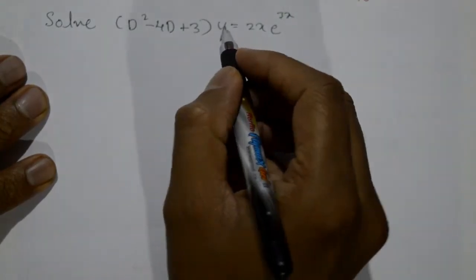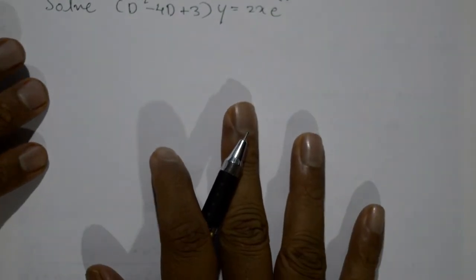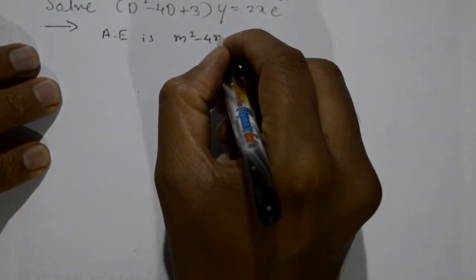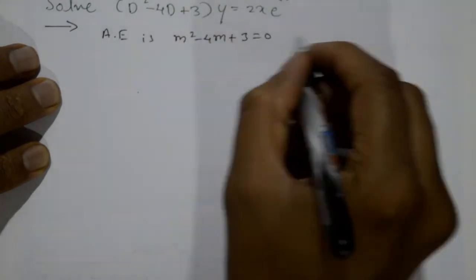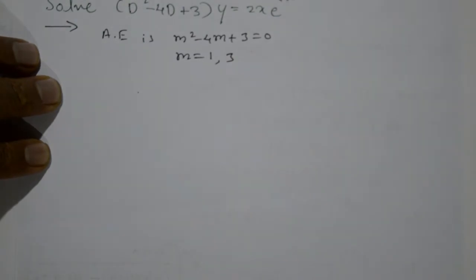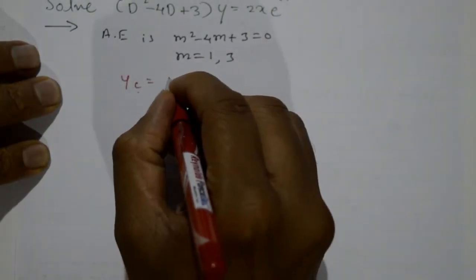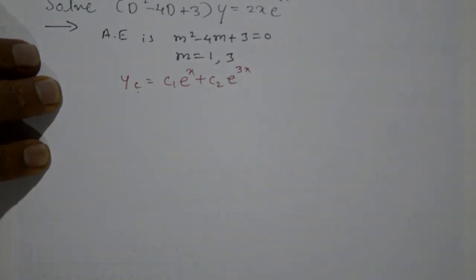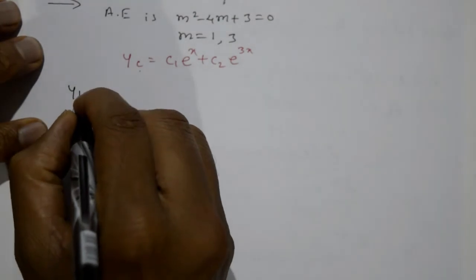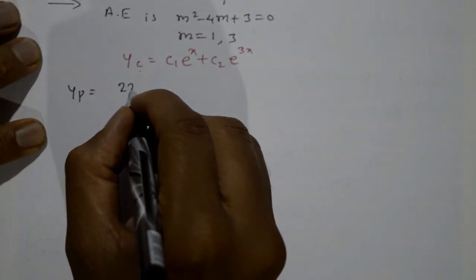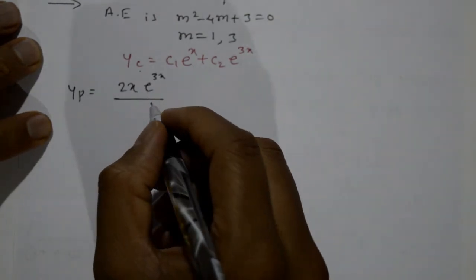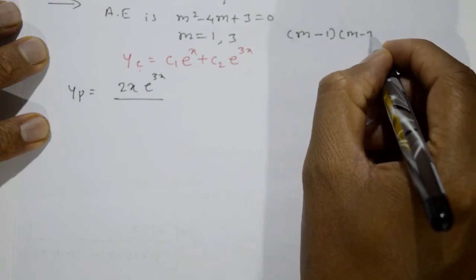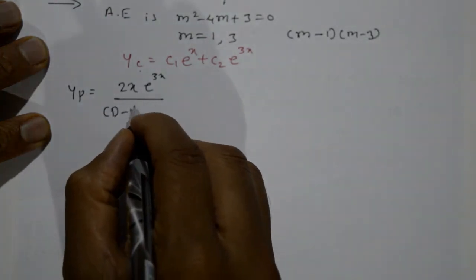Example 2: Solve (D² - 4D + 3)y = 2x·e^(3x). The auxiliary equation is m² - 4m + 3 = 0, giving m = 1 and m = 3 by factorization. The complementary function is yc = c₁e^x + c₂e^(3x). The particular integral is yp = 2x·e^(3x) / f(D), where f(D) = (D-1)(D-3).